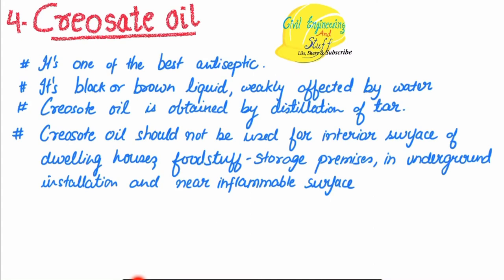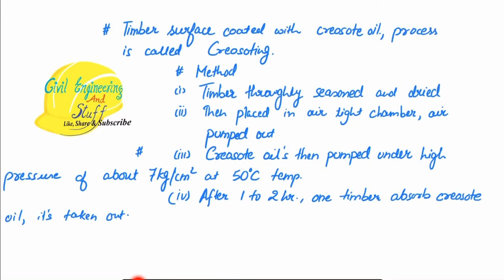Next, we have creosote oil, which is one of the best antiseptics — a black or brown liquid obtained by the distillation of tar. Creosote oil is weakly affected by water. One important thing to note is that creosote oil should not be used on interior surfaces, in food storage areas, in underground installations, or near inflammable surfaces. The timber surface to be coated must first be seasoned and dried, then inserted into an airtight chamber where creosote oil is pumped at high pressure of 7 kg per cm² at a set temperature. After 1 to 2 hours, the timber absorbs the creosote oil and is then taken out.